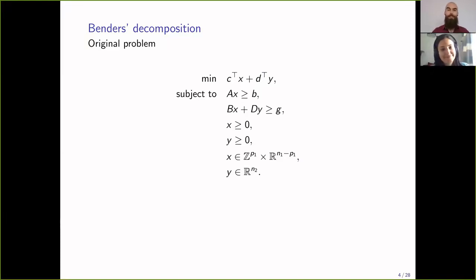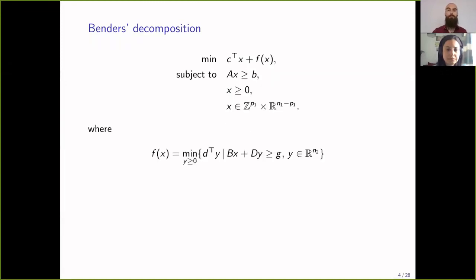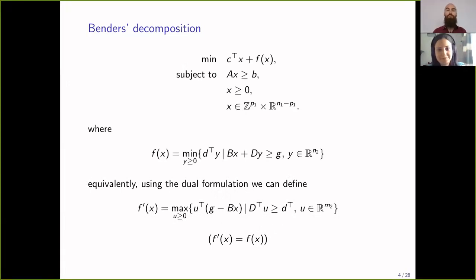We'll go straight into the derivation of Benders decomposition. In the original problem, the second-stage variables are continuous, and we rely on that for the duality components of the decomposition. We place the second stage with a value function and then take the dual form of this value function. In the dual form, the feasible region does not depend on x — it's the objective function that only depends on x.